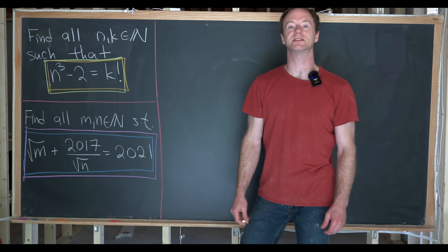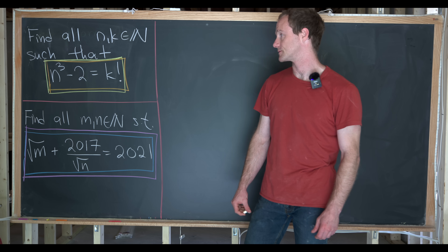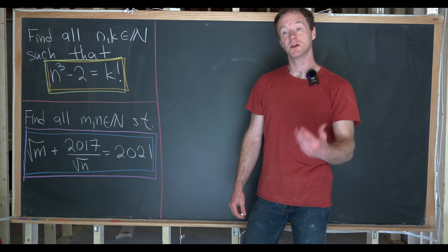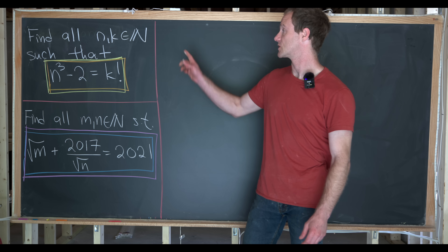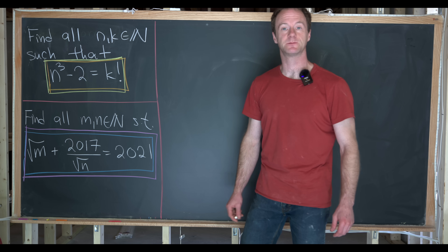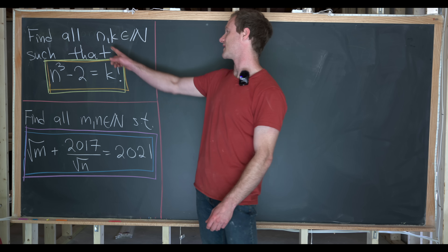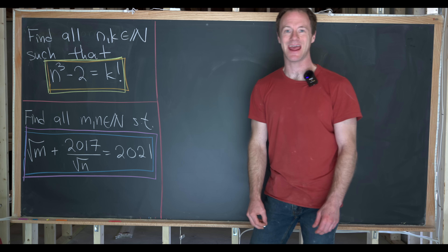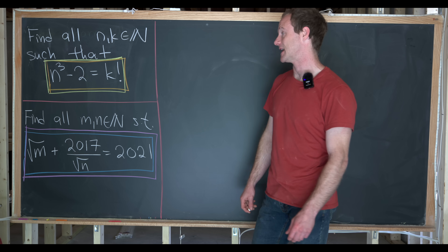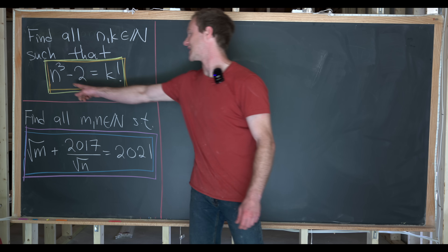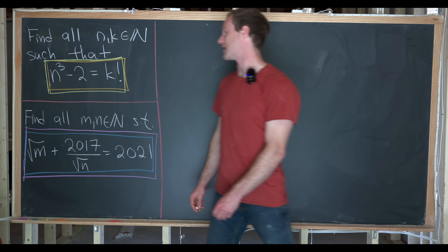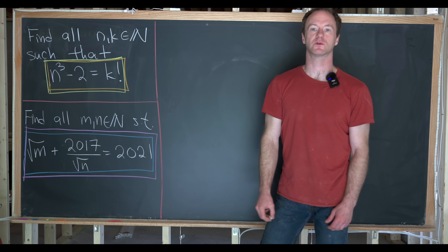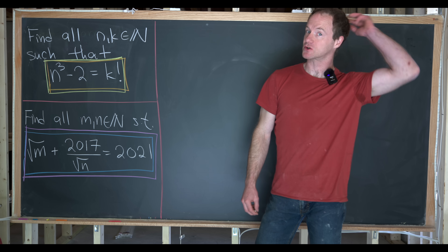I want to look at two nice number theory problems today. The first one goes like this: we want to find all natural numbers n and k such that n cubed minus 2 equals k factorial.